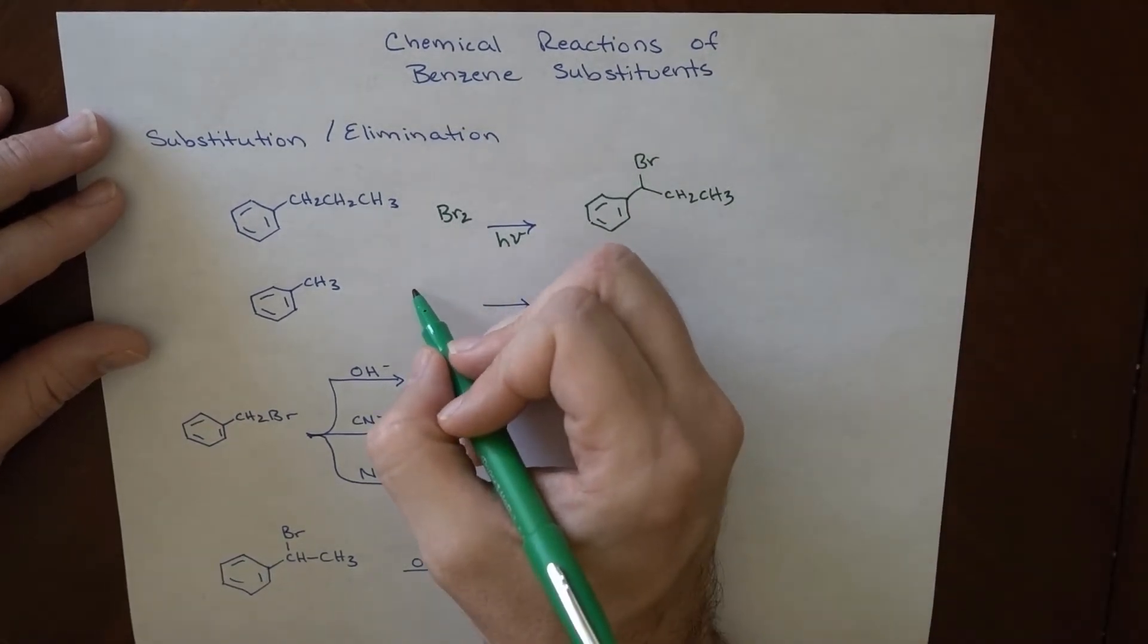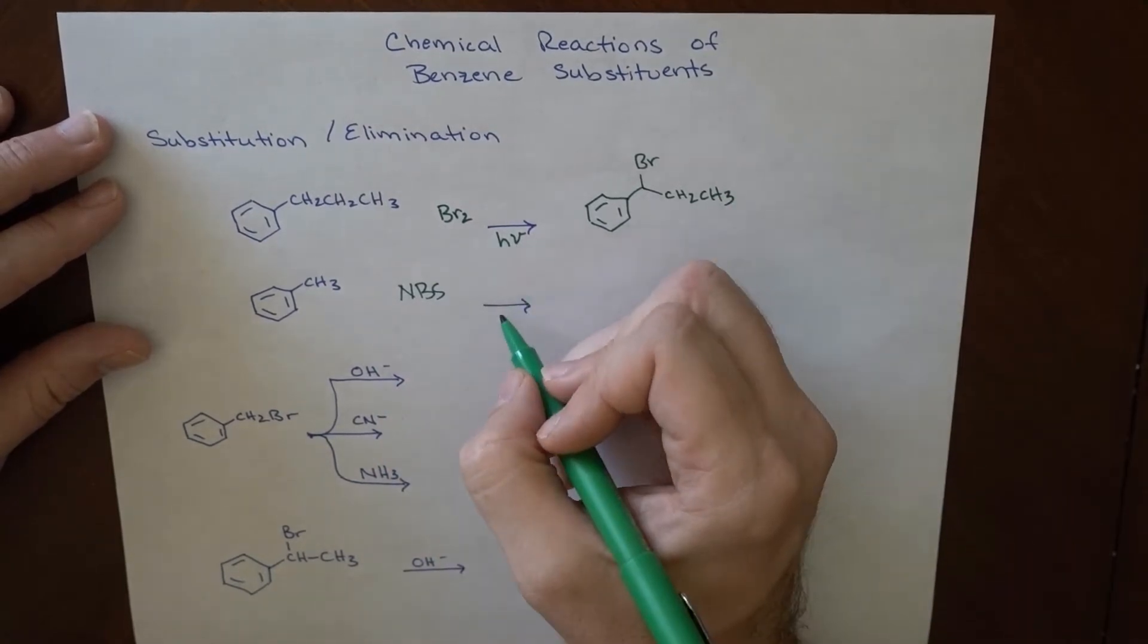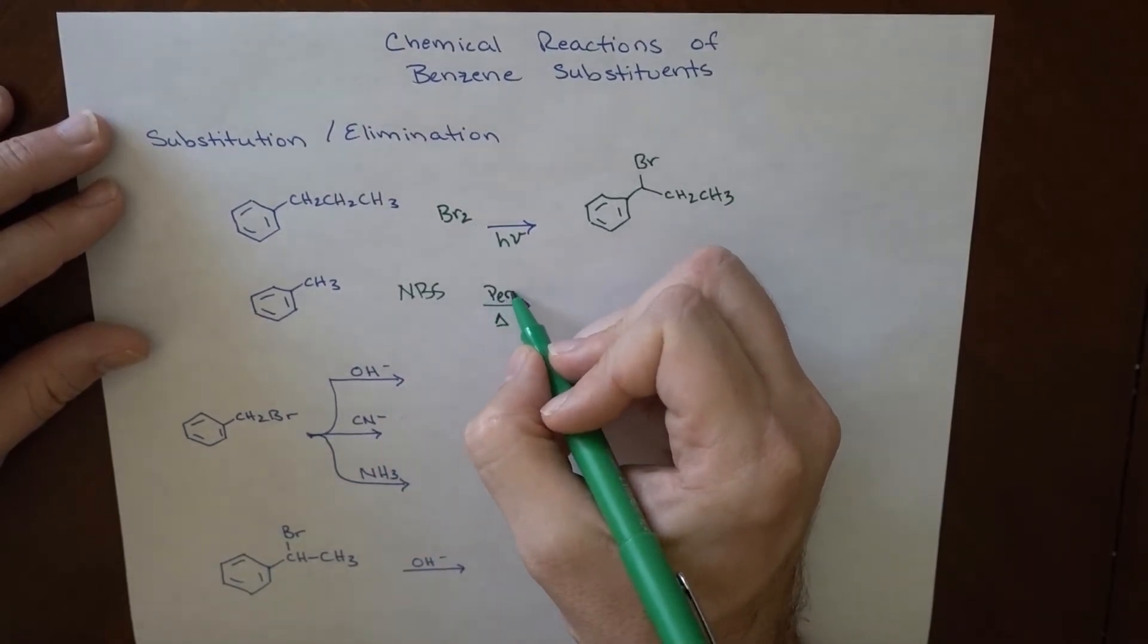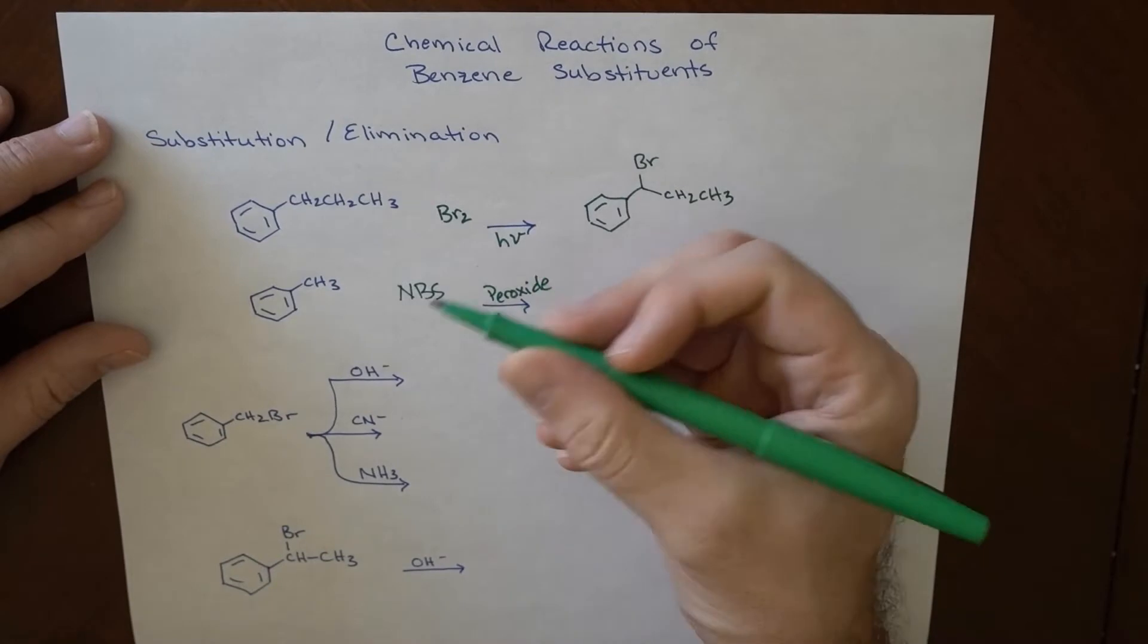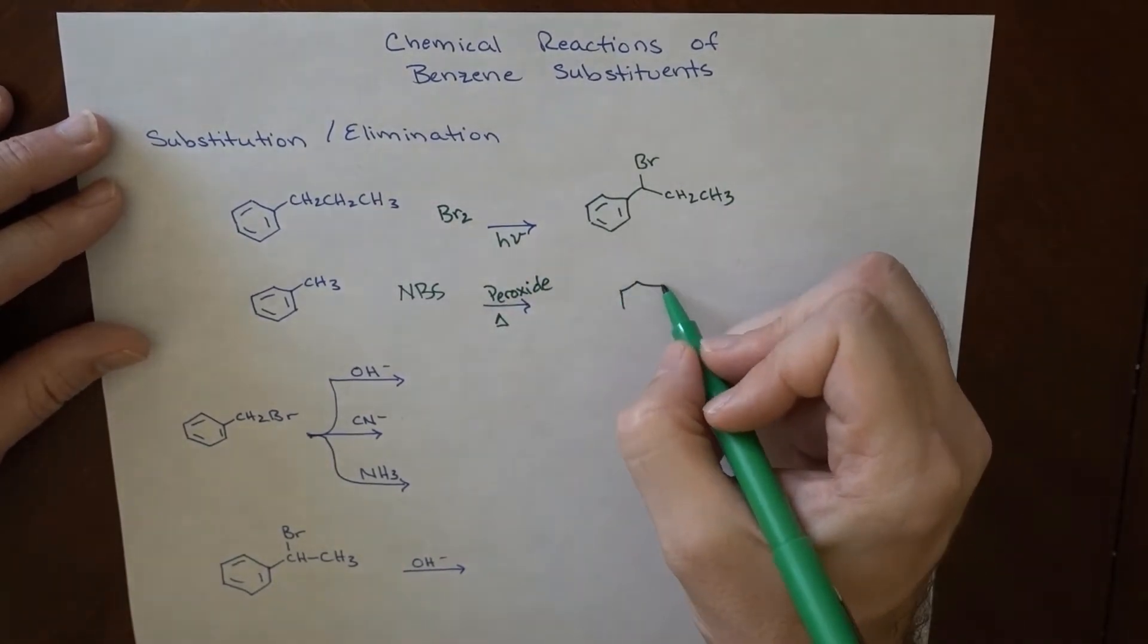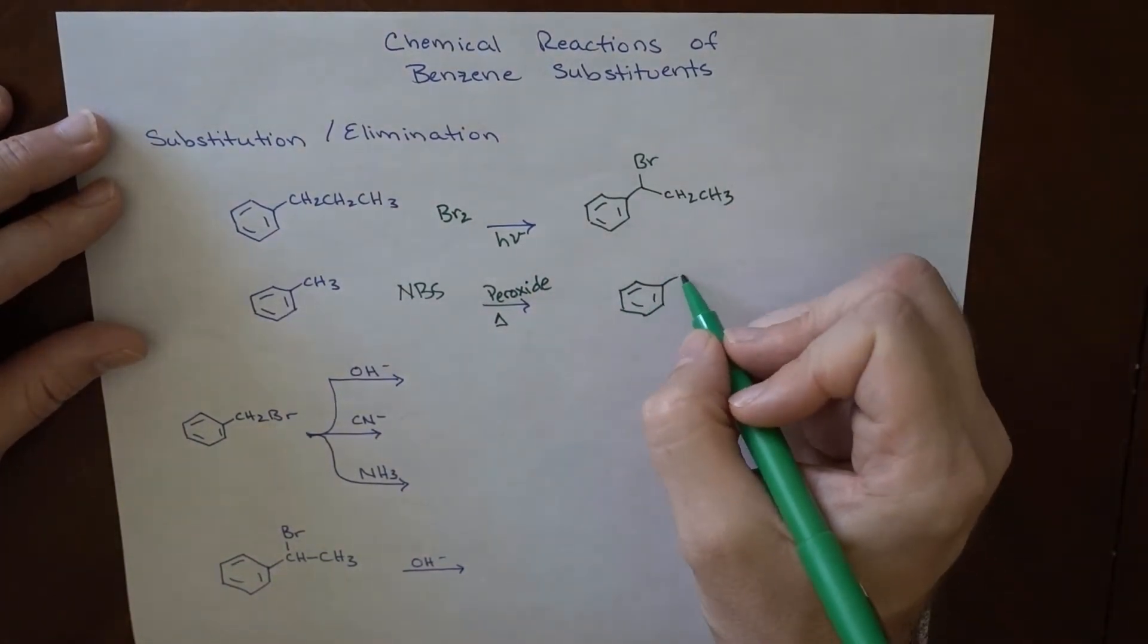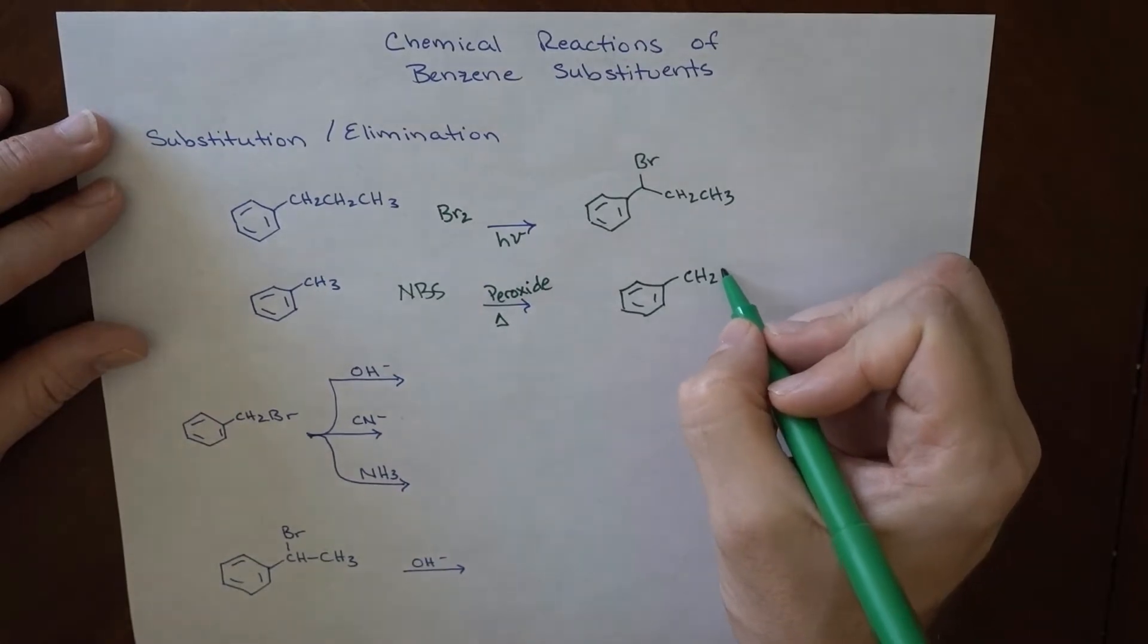And then if we also want to add N-bromosuccinamide, NBS, in the presence of heat and peroxide, we can end up adding it to a terminal carbon as well. So we've got a couple different places where we can end up adding bromine.